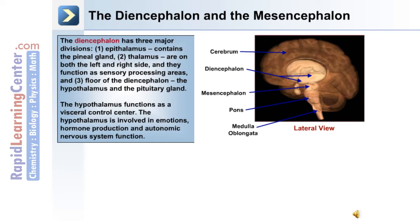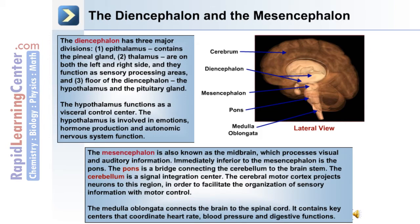The hypothalamus functions as a visceral control center and is involved in emotions, hormone production, and autonomic nervous system function. The mesencephalon, also known as the midbrain, processes visual and auditory information. Immediately inferior to the mesencephalon is the pons, which is a bridge connecting the cerebellum to the brain stem.